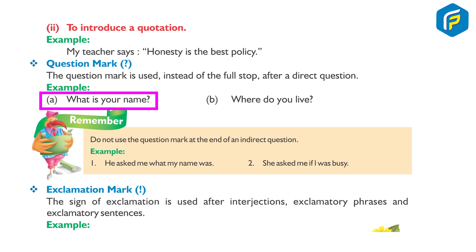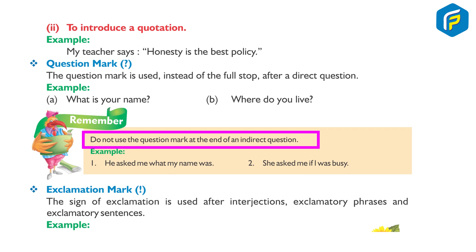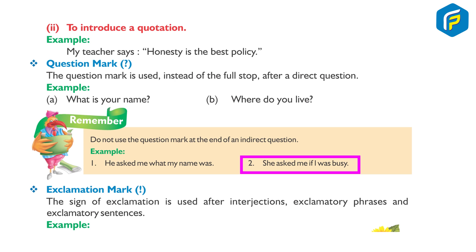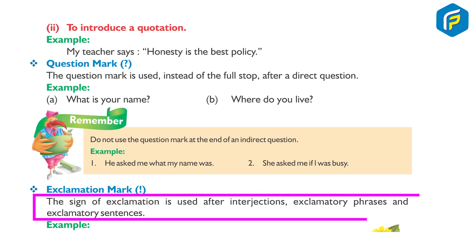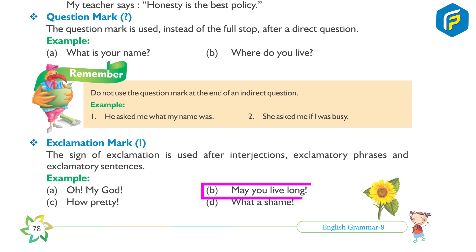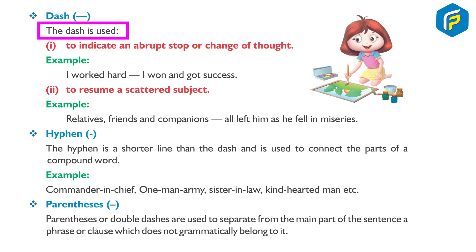Example: A — What is your name? B — Where do you live? Remember, do not use the question mark at the end of an indirect question. Example: He asked me what my name was. She asked me if I was busy. Exclamation mark: The sign of exclamation is used after interjections, exclamatory phrases, and exclamatory sentences. Example: Oh my God! May you live long! How pretty! What a shame!